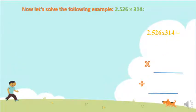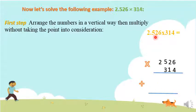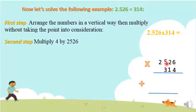Now let's solve the next example. Example 2: multiply 2.526 times 314. Let's follow the same steps. Step 1: write them in the vertical form. Step 2: multiply without taking the decimal point into consideration. We arrange them in the vertical form and start multiplying with the ones digit of the second number, which is 4. We multiply 4 by 2,526.